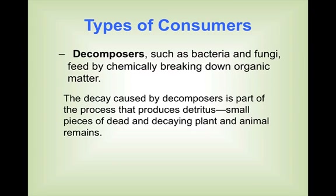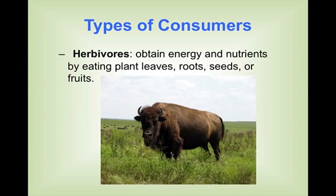That detritus is a biotic factor — it was once living. Herbivores attain their energy and nutrients by eating plant leaves, roots, seeds, or other fruits. We typically talk about herbivores as eating primary producers. This is an American buffalo; at one point they ranged all across the Midwest United States, and they are herbivores — they eat only grass.